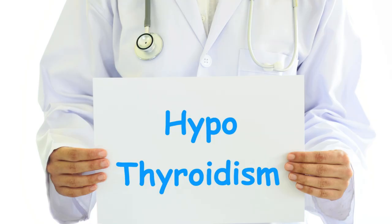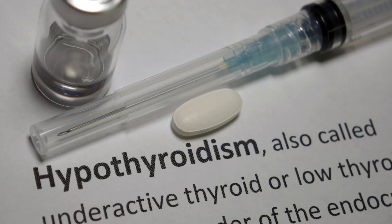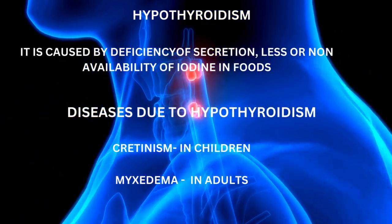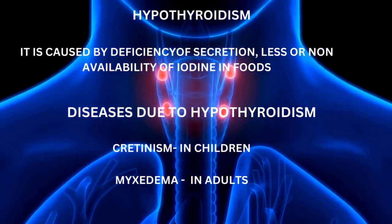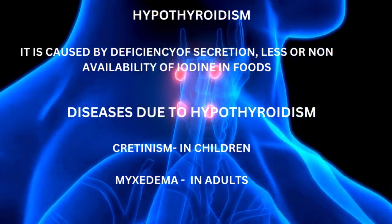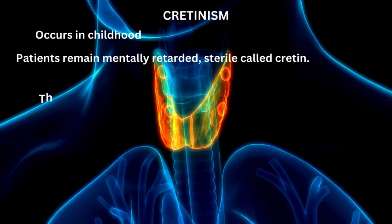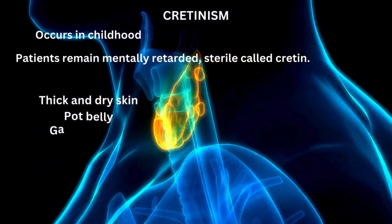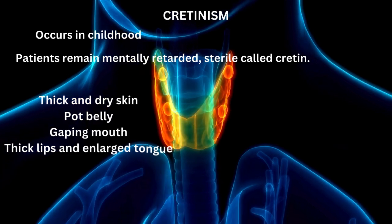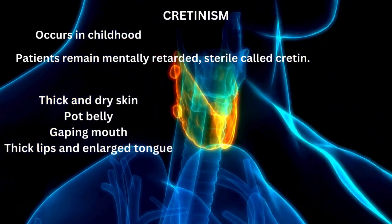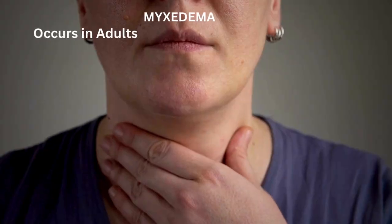The first irregularity is hypothyroidism, which is an underactive thyroid where low thyroxine is produced. Deficiencies include less or non-availability of iodine in foods. Diseases include cretinism in children and myxedema in adults. Cretinism occurs in childhood — patients remain mentally retarded and sterile, and are called cretins. They have thick and dry skin, pot belly, gaping mouth, thick lips, and an enlarged tongue.